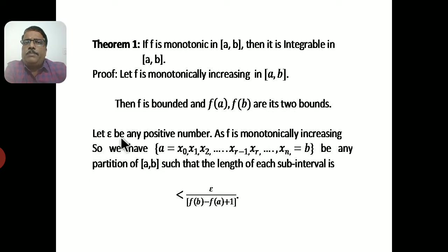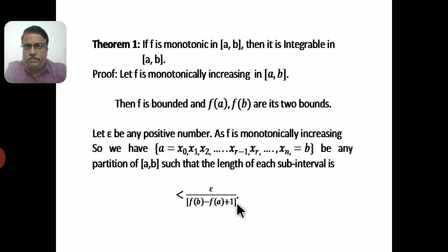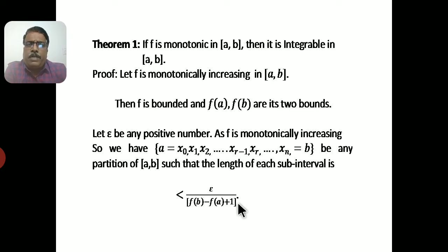Let epsilon be any positive number. Since f is monotonically increasing, we choose a partition P = {a = x₀, x₁, x₂, ..., xᵣ₋₁, xᵣ, ..., xₙ = b} of [a, b] such that the length of each subinterval is less than epsilon divided by [f(b) − f(a) + 1], where f(b) − f(a) + 1 is a fixed number.